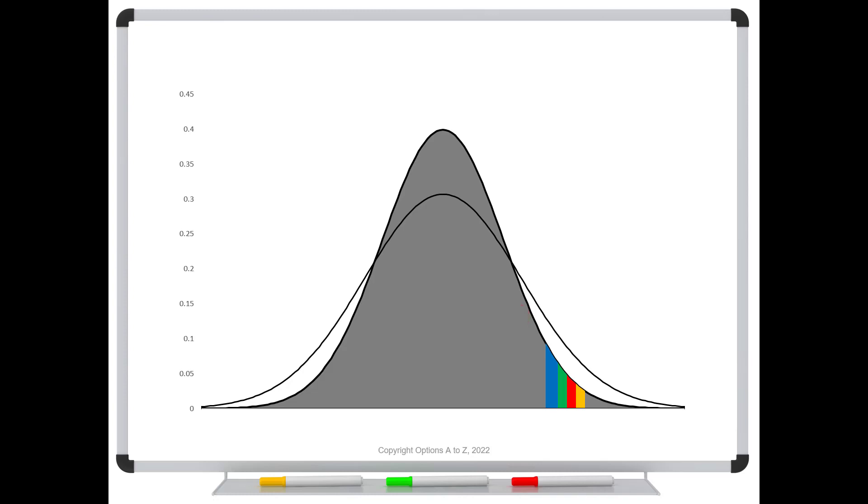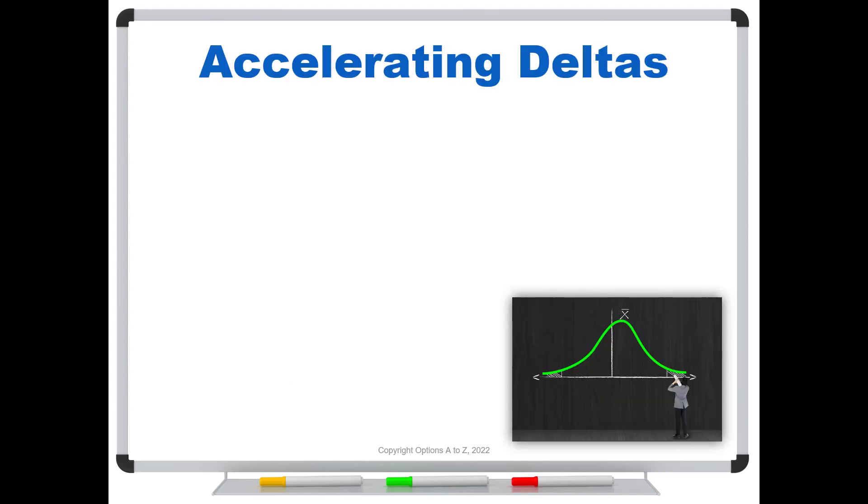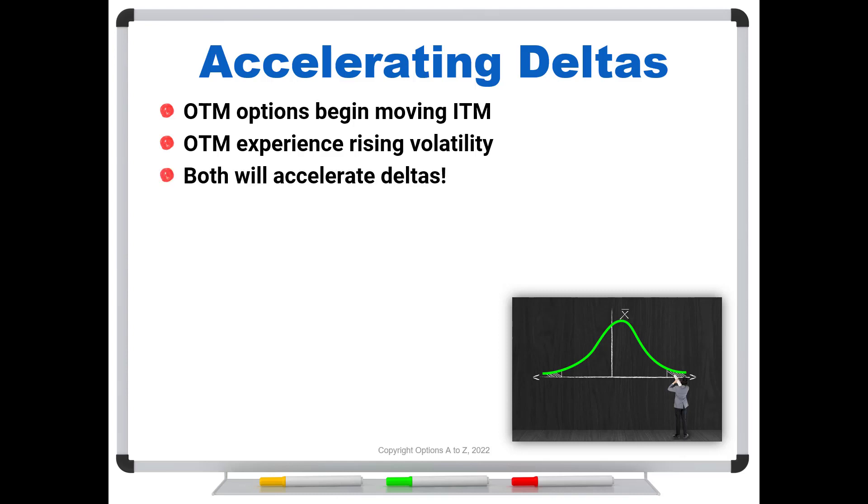So the thing to understand is about accelerating deltas and why that happens. It happens particularly with your out-of-the-money options when they begin moving in the money. That's when you're going to see them really accelerate those deltas. It can also happen when these out-of-the-money options experience rising volatility. But both of these together will accelerate your deltas that much faster.